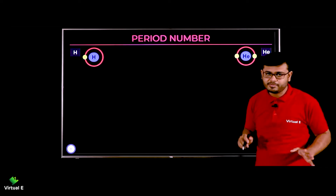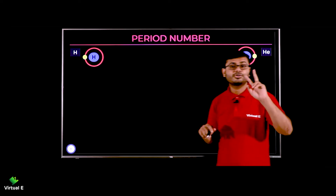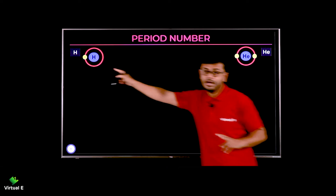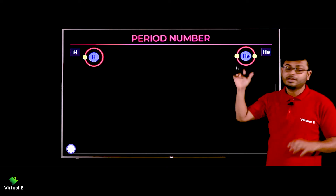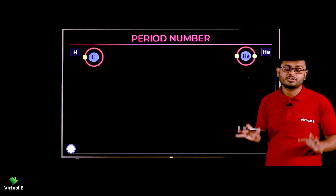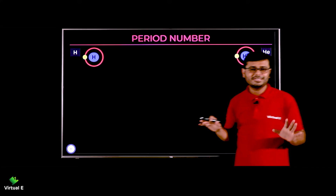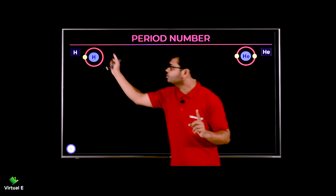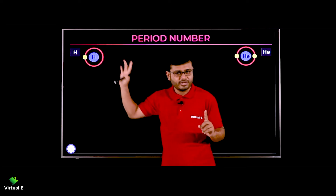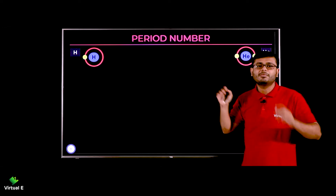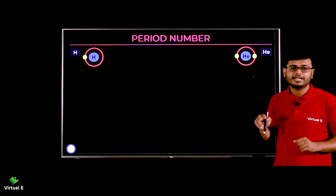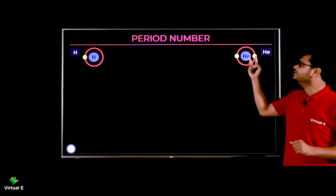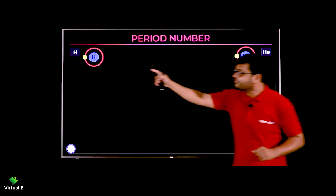Let's talk about the first period. In the first period there are two elements — hydrogen and helium. Hydrogen has one electron, so one shell with one electron. Helium has two electrons, and the first shell is completed.